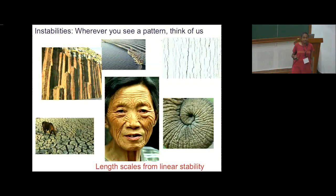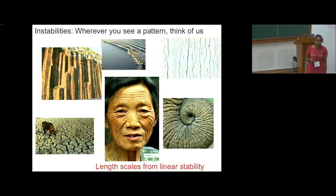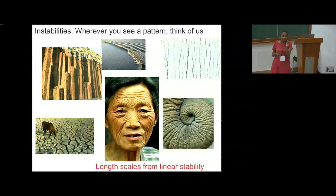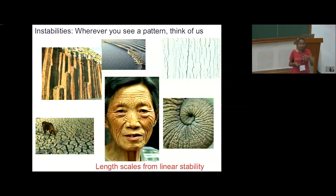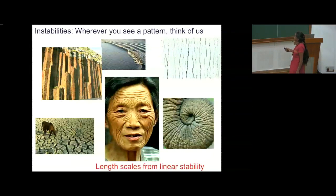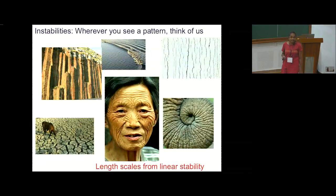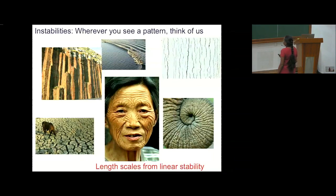We'll talk about stability now. Very often you see patterns which arise out of instability — none of this is turbulence. In all these cases there is some kind of nonlinear saturation where a wavelength or length scale is decided by the linear stability, and the system has gone nonlinear and saturated so that you see interesting patterns. So next time you see such a pattern, think of what stability problem or mechanism created it.